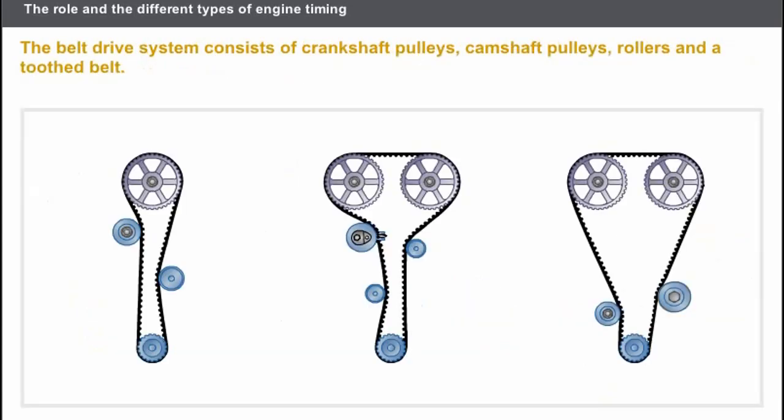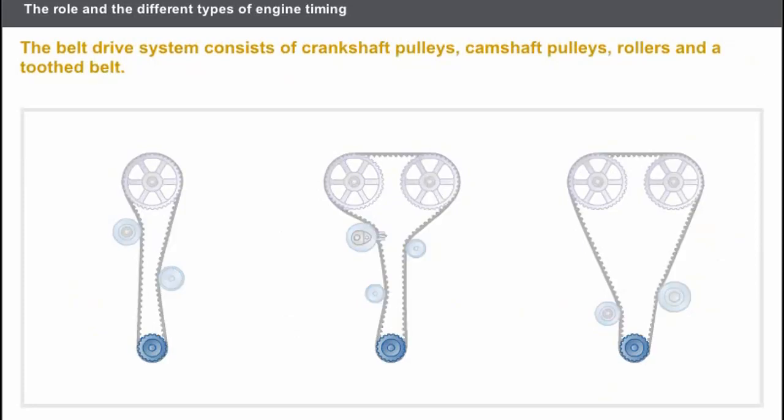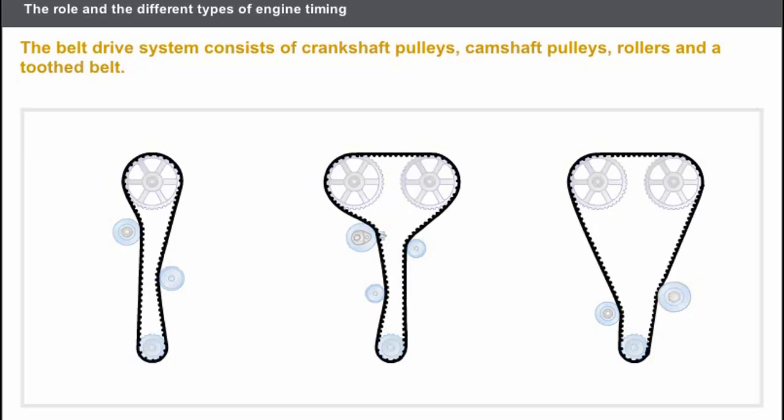Now, let's take a look at the belt drive in more detail. The timing consists of a sprocket driven by the crankshaft, one or more fixed rollers, a tensioning roller, one or more toothed camshaft pulleys, and a toothed belt.